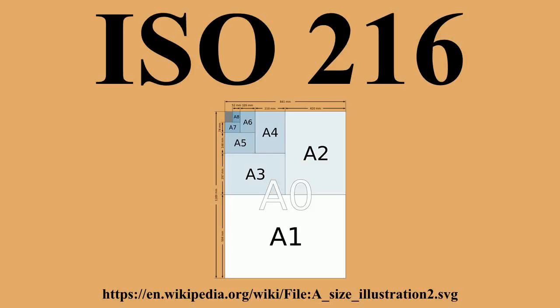ISO 216 specifies international standard paper sizes used in most countries in the world today, although not in Canada or the United States. The standard defines the A and B series of paper sizes, including A4, the most commonly available size. Two supplementary standards, ISO 217 and ISO 269, define related paper sizes. The ISO 269 C series is commonly listed alongside the A and B sizes.